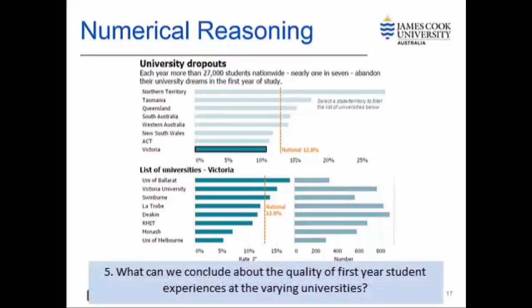The fifth question asks what we can conclude about the quality of first year experience at the varying universities. This question asks us to make an assumption that the university dropout rate is related to the quality of the first year experience at each university. This information is not actually contained in the graph and could be due to a number of different factors. However, if we assume that happy students stay at university and that this was a result of quality, we could argue that students in Victoria are most satisfied with their university experience and that the quality may be best at the University of Melbourne and least at the University of Ballarat.